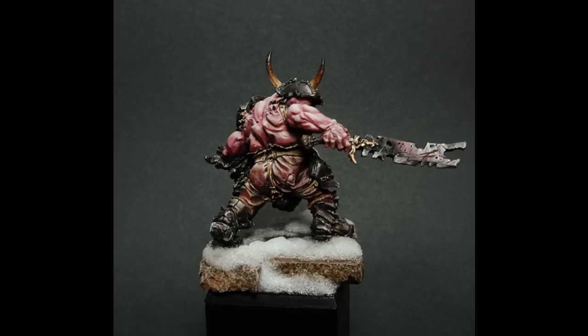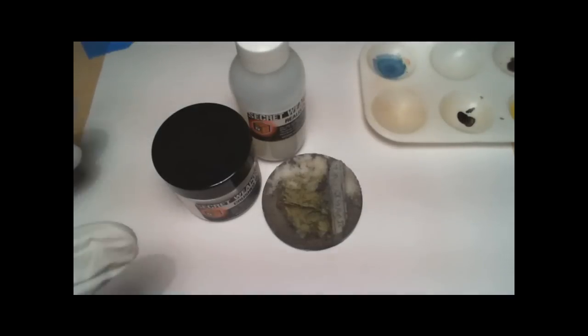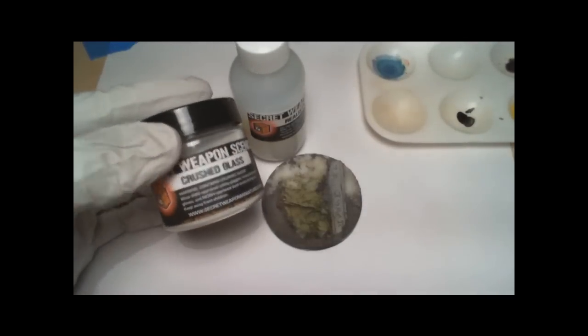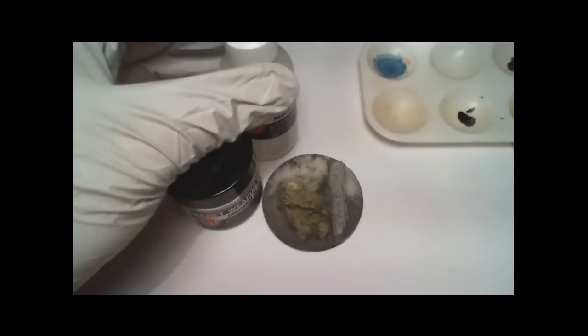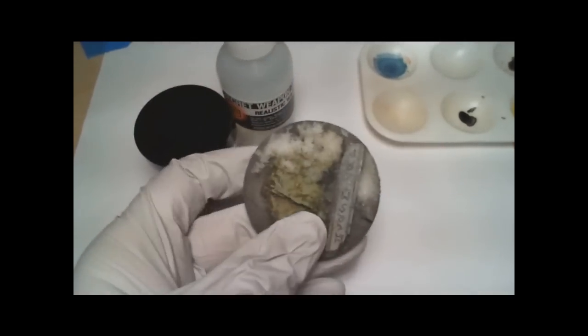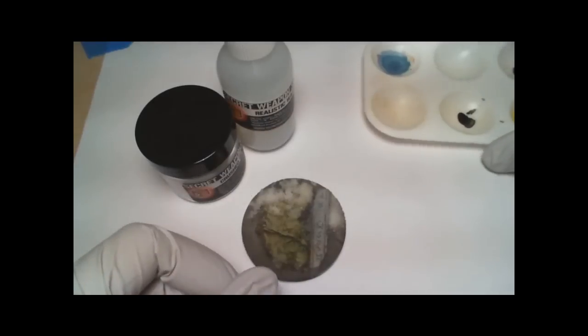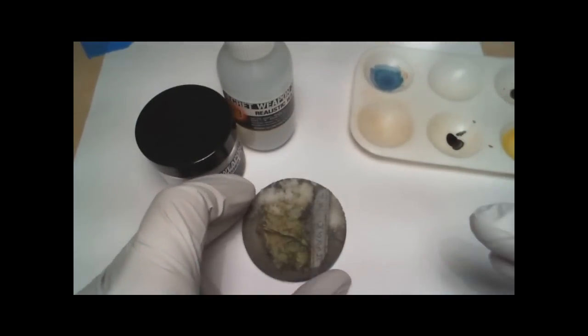And now let's take a look at working with the crushed glass to create your own realistic snow. What I have here is my Secret Weapon Crushed Glass, a bottle of realistic water that comes with the crushed glass bundle, and a runic mountain base to which I've already applied some of the crushed glass snow, and one of my spare pallets.